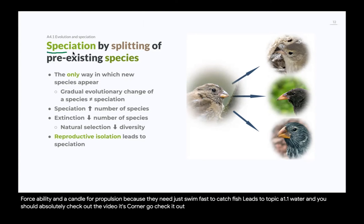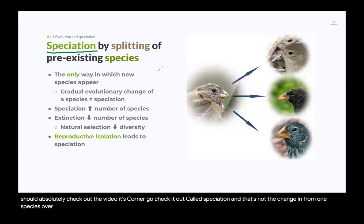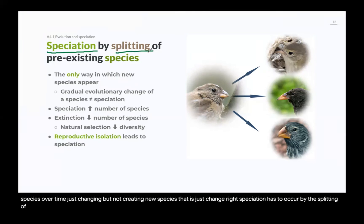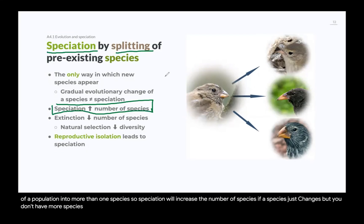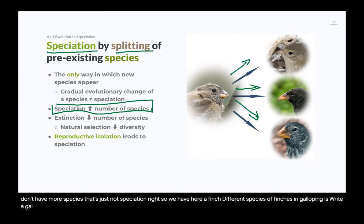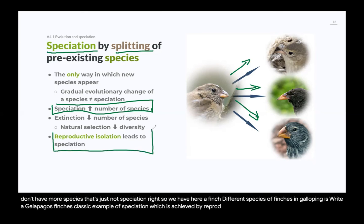When new species appear, this is called speciation — and that's not just a single species changing over time without creating new species; that is just change. Speciation occurs by the splitting of a population into more than one species, increasing the total number of species. The Galapagos finches are a classic example — a finch diverging and splitting into different species — and speciation is achieved by reproductive isolation.